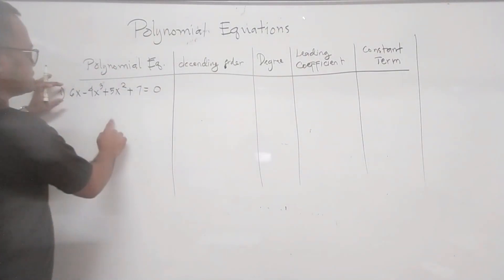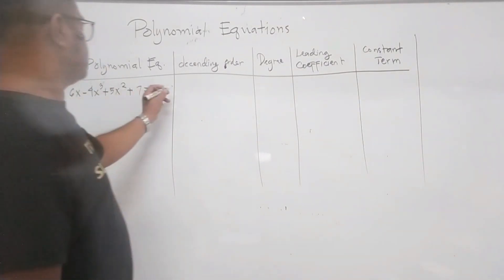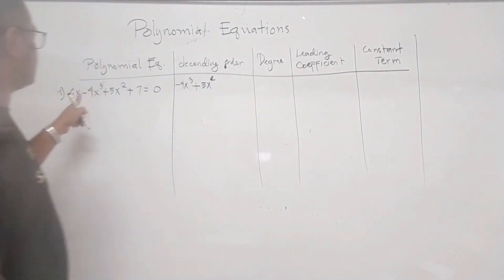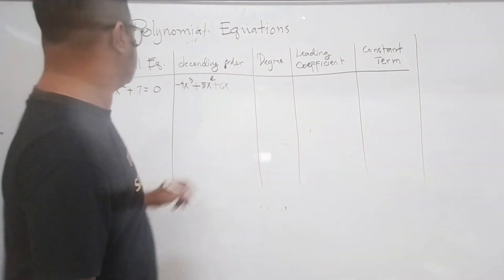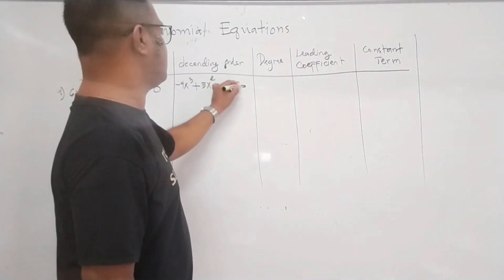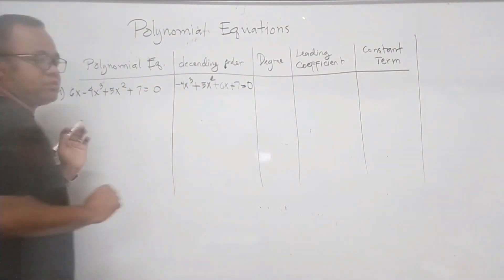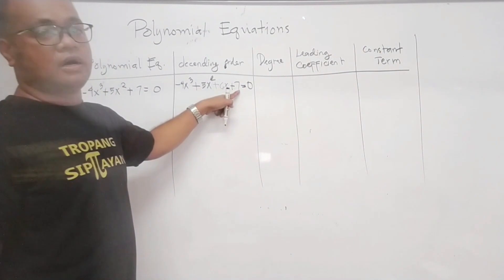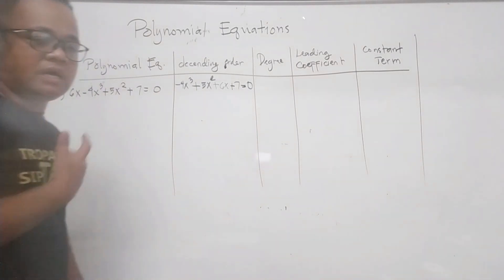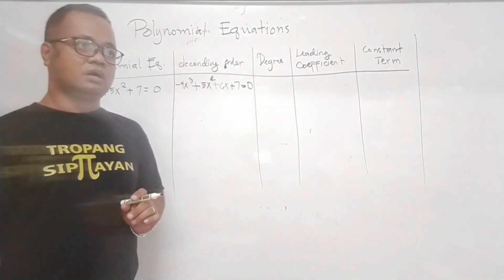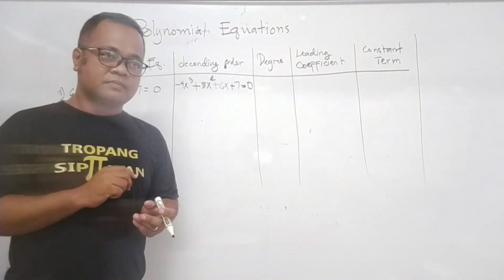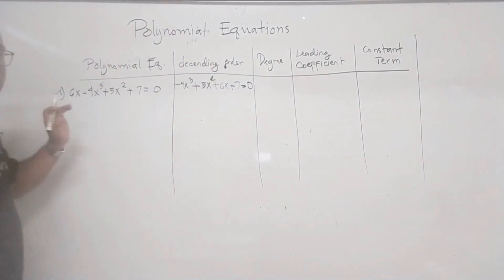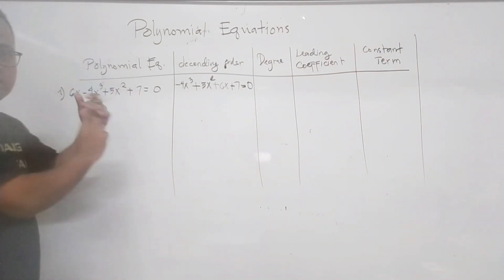Let us arrange this in descending order. We have the highest exponent: negative 4x cubed, followed by positive 5x squared, then positive 6x, then positive 7 equals 0. When we say descending order, you write first the term with the highest exponent down to 0. Interchanging the position of the terms in this polynomial will not change the sign, because we haven't moved anything past the equal sign.